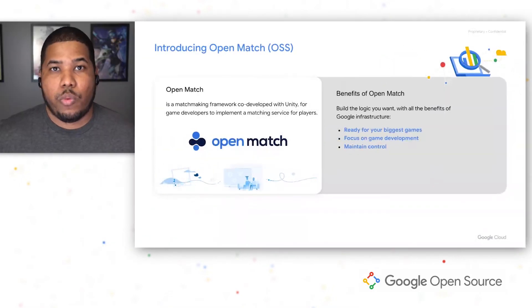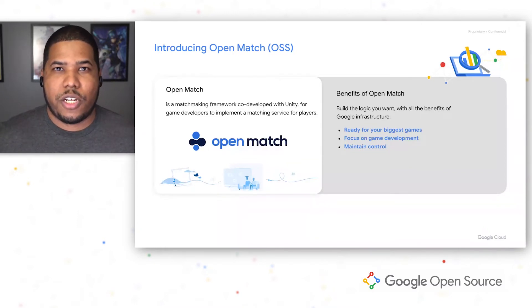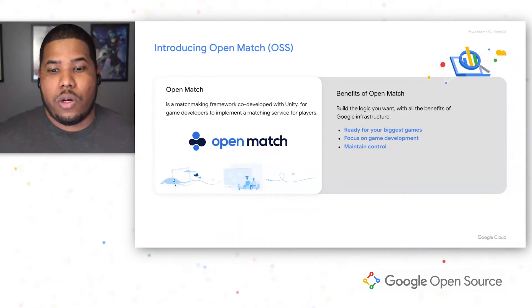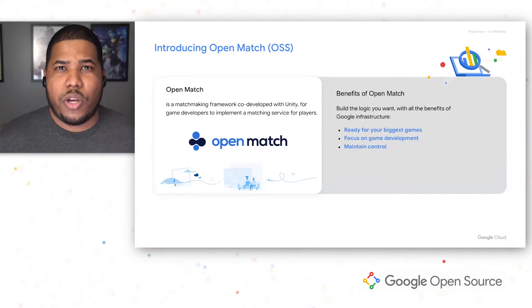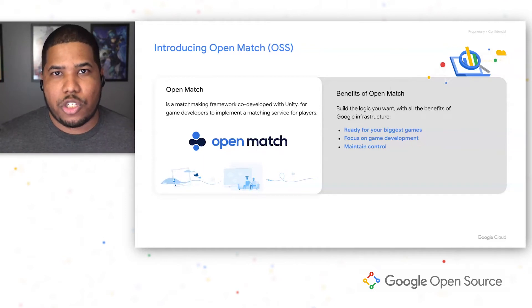OpenMatch runs on Kubernetes, which allows you to maintain control — separating players as needed and deploying your services wherever you want. We deploy on GKE, but being able to scale and use the benefits of Kubernetes means you can take it just about anywhere. There's no lock-in with us.